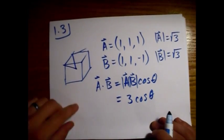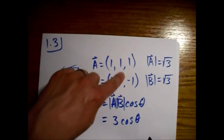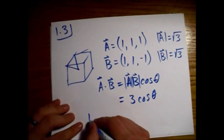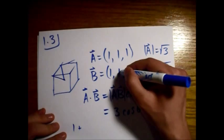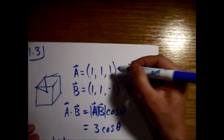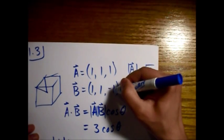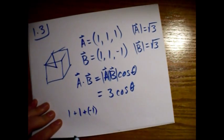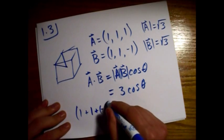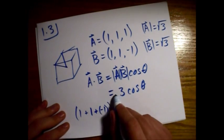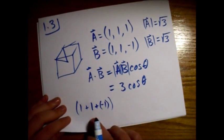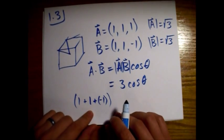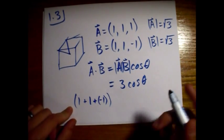All right, now there's another way to do the dot product. It's just to go component by component. One times one is one, plus one times one is one, plus one times minus one is minus one. So that's another way of doing the dot product, and that's going to be equal to this here. Well, this just comes out to be one.